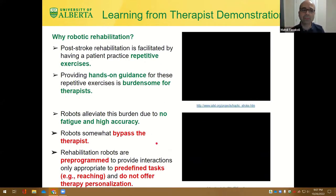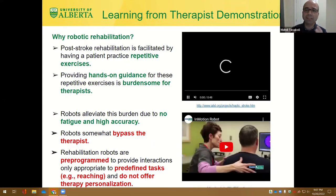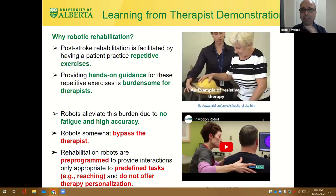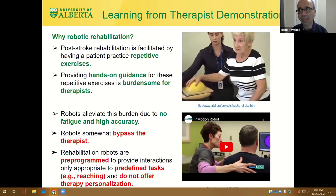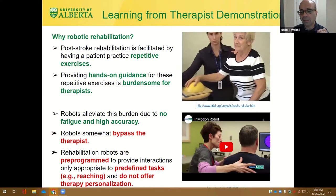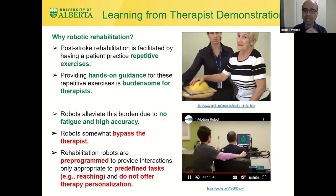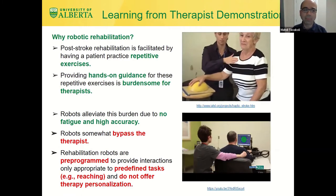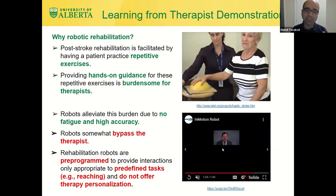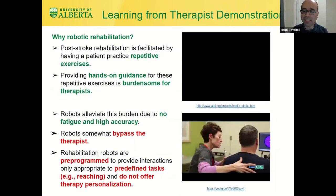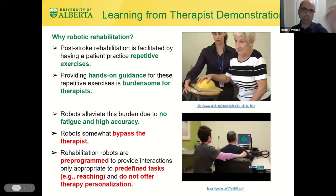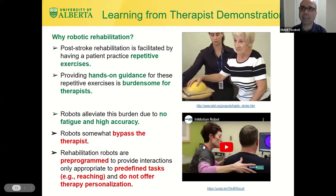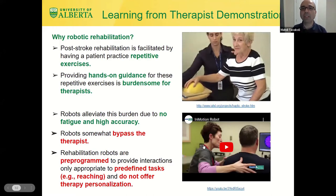Rehabilitation is facilitated by the patient practicing repetitive exercises, and the therapist is there to provide hands-on guidance, sometimes assistance and sometimes resistance for the patient to build muscle strength. This is very burdensome for therapists, and therefore robots have been developed. Robots are basically like a haptic game engine that never get tired and the patient can get as much exercise as they want. The problem is that these robots bypass therapists and are only built for very simple and specific interactions, like reaching motions.